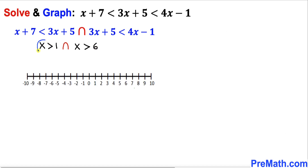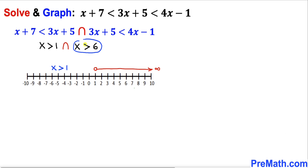Let's graph x is greater than 1: at the value 1 we place an open circle, and the graph extends to the right toward positive infinity. Now for x is greater than 6: we place an open circle at 6, and this also extends to the right toward positive infinity.